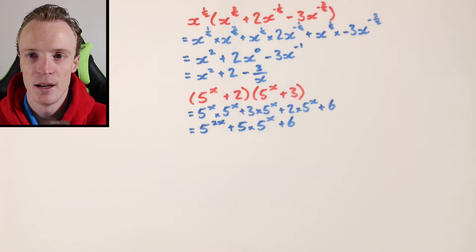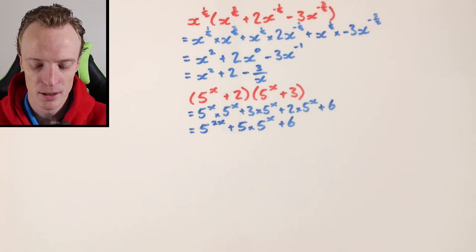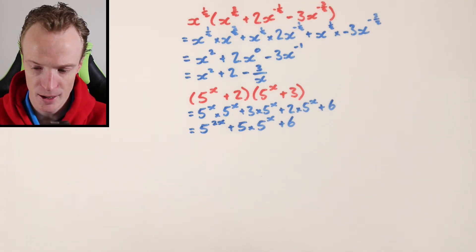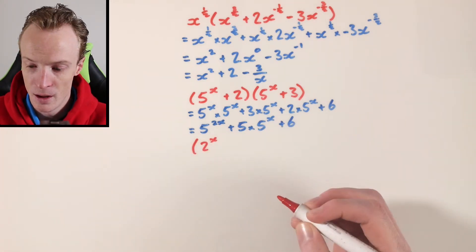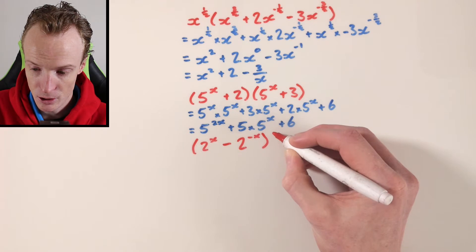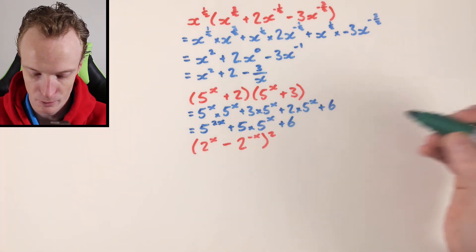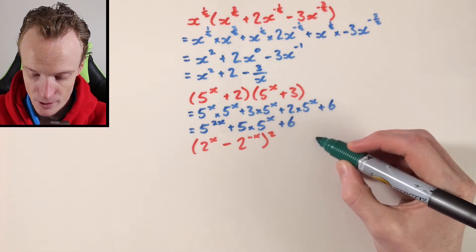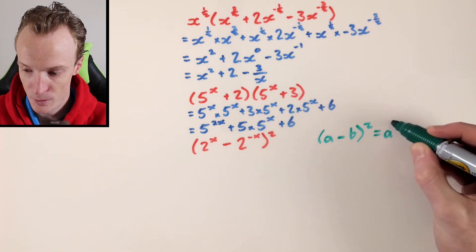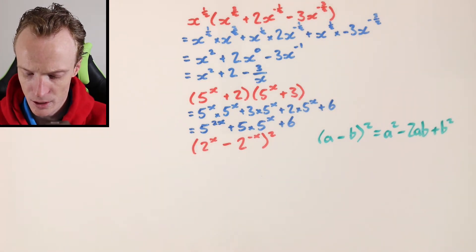As you can see, you can start using the same expansion laws in combination with the index laws, even with rational indices and indices that are unknowns — your variables. But let's have a look at one more. Let's say I have 2 to the power of x minus 2 to the power of negative x, but this time it's a perfect square — so everything's all squared. To do this, I'm going to bring in my perfect square rule: if I had a minus b all squared, it equals a squared minus 2ab plus b squared.